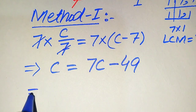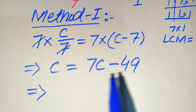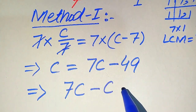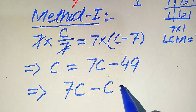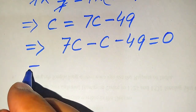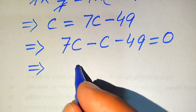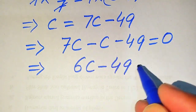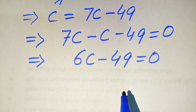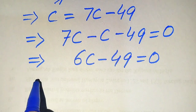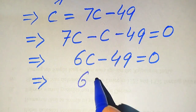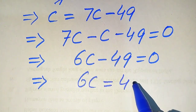In the next step we move C to the right-hand side, so it becomes minus C. We have 7C minus C minus 49 equals 0. This simplifies to 6C minus 49 equals 0. Moving minus 49 to the right-hand side gives us 6C equals 49.